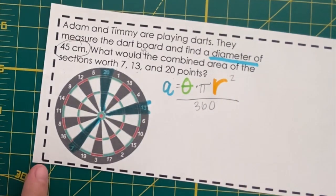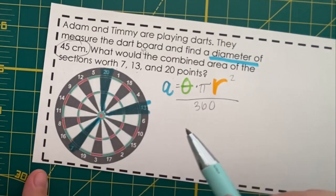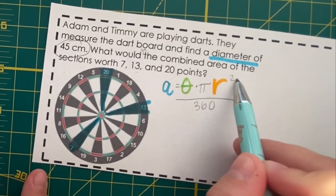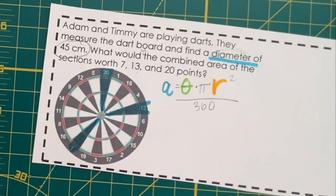So, we know from our last notes that the formula for the area of a sector, an area of a portion of a circle, will be theta times pi r squared over 360.